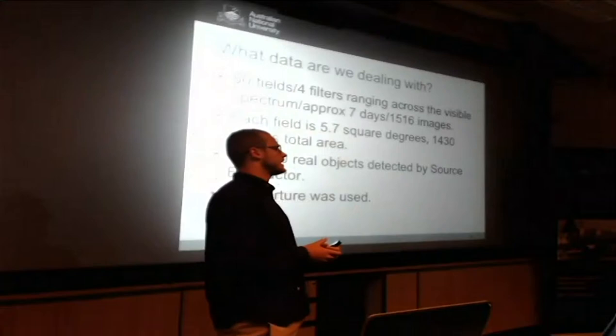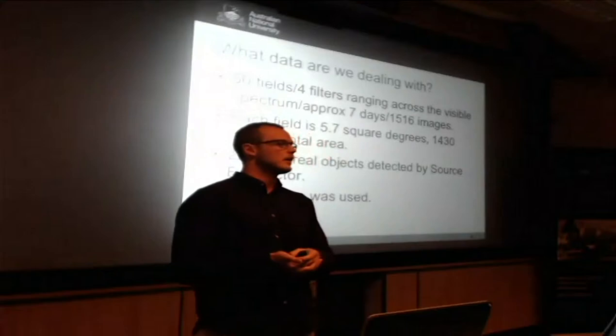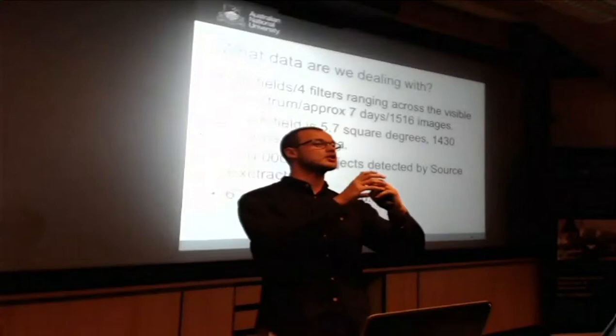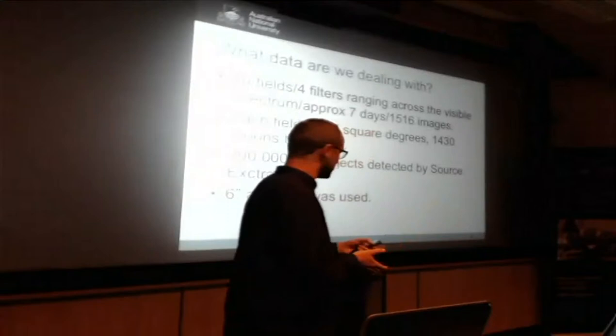We used this program called Source Extractor, which basically just picked out the objects in our images, and we got about 200,000 real objects. We had a look at the different apertures to use and went with the six half-second aperture, because we tried doing small apertures and extrapolating that out to try to get the total flux, but we found that the error that extrapolation brought in was a lot bigger than just using six aperture.